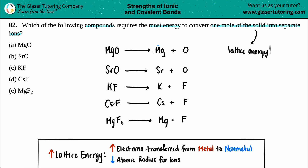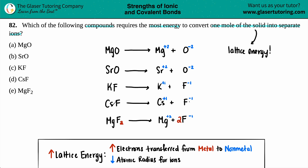Now let's put some charges on these, using the periodic table. Magnesium is in group two, so that's a +2. Oxygen is group 16, so that's a −2. Strontium is also in group two, right below magnesium, so +2; oxygen is −2. Potassium is in group one, so +1; fluorine is a halogen, group 17, so −1. Cesium is also group one, +1; fluorine is −1. Magnesium is +2 and fluorine is −1. We just want to find which one requires the most energy — that's the lattice energy.